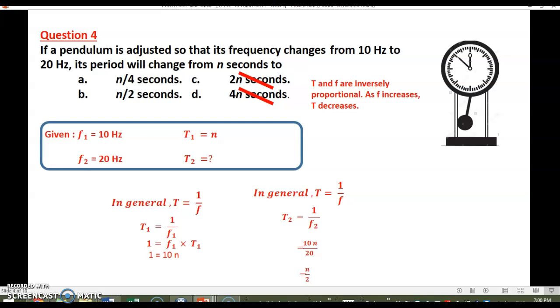So we substitute it. So here it was proved that 1 equals 10n. So we substitute 1 by 10n. And f2 is given to be 20. So now finally we get n over 2. So the right answer is B.